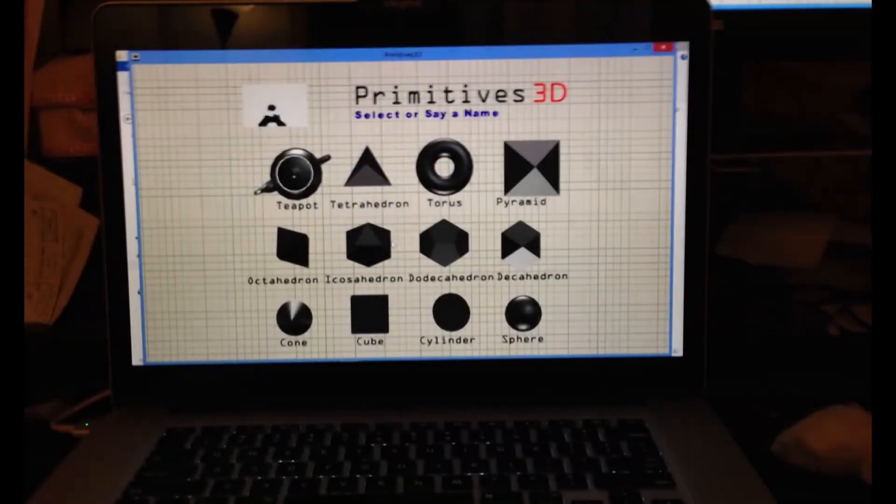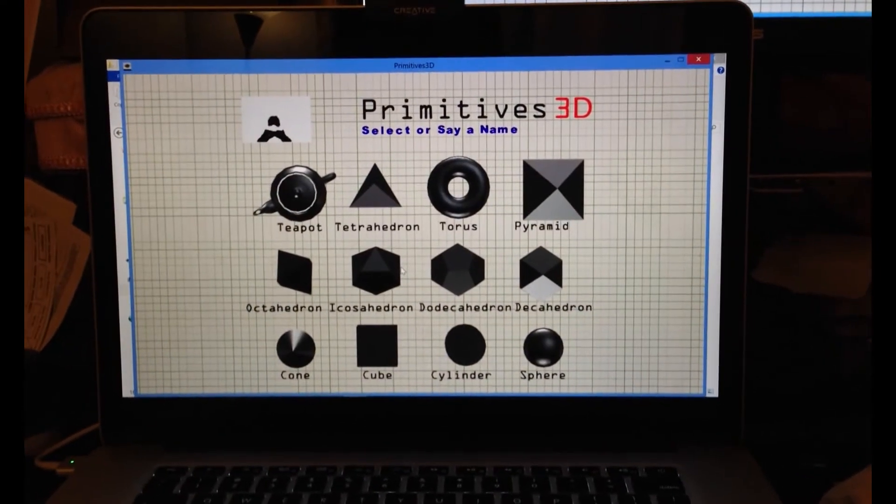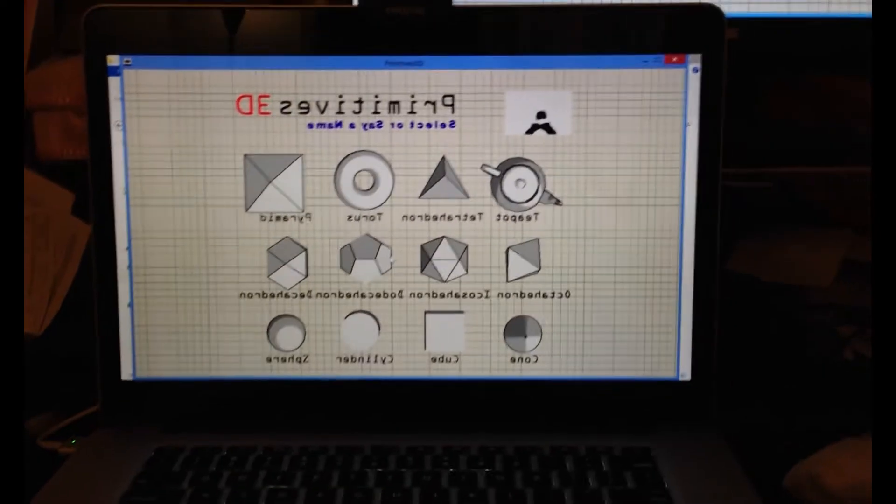By default, all the objects are graphite, like your pencil. You can also voice the command cartoon to switch to a sketch-like mode.